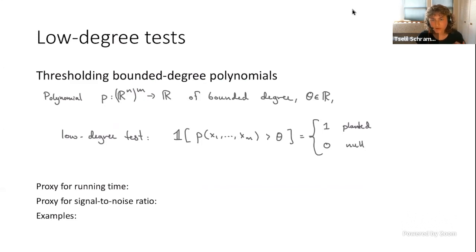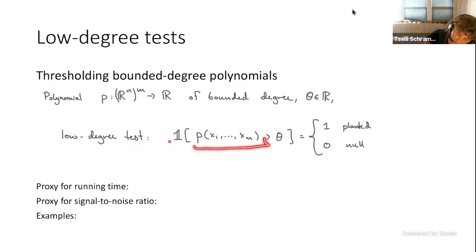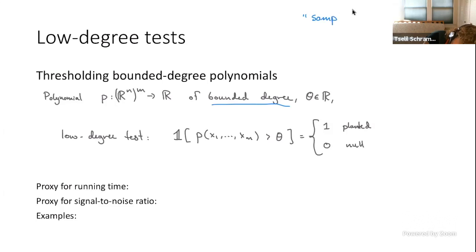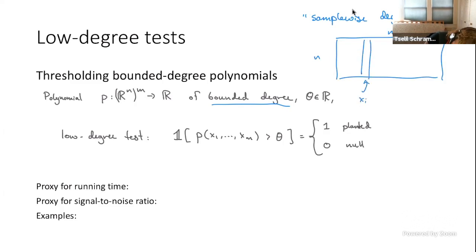Our second model is low-degree tests. We have a polynomial in all m samples. The polynomial has bounded degree and we choose some threshold theta — our low-degree test checks if the polynomial evaluated on the data is bigger than theta, hoping the answer is one in the planted case and zero in the null case. The notion of bounded degree here — 'sample-wise degree' — is a little different from what Alex discussed. A polynomial has sample-wise degree (d, k) if, looking at the n-by-m matrix of data where each data point is a column x_i, it uses at most k columns — every monomial touches at most k samples — and every monomial uses at most d entries of a sample.